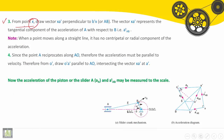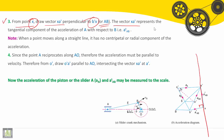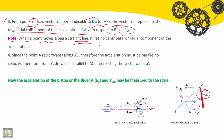Third step: from point X, draw the vector X A dash perpendicular to B dash X — it will be automatically perpendicular to AB. Here it is perpendicular to B dash X. The vector X A dash represents the tangential component of the acceleration of A with respect to B — the ATAB. As a note: when a point moves along a straight line — translation, for example — it has no centripetal, no radial component of the acceleration. The acceleration will be linear, or called linear acceleration.